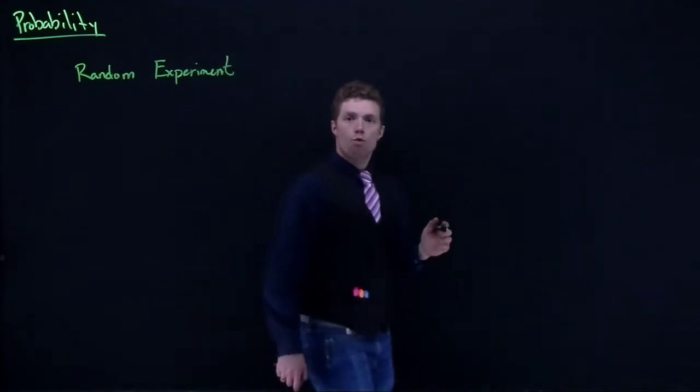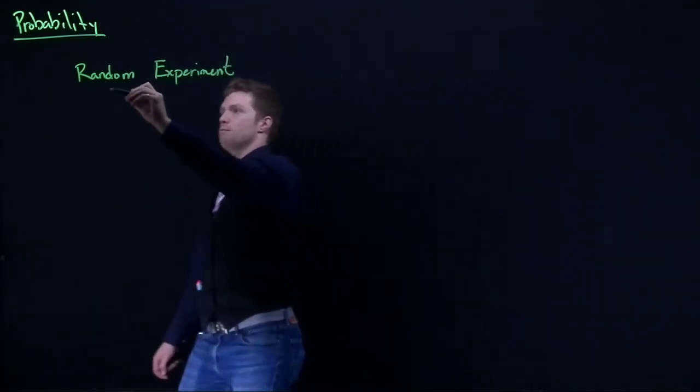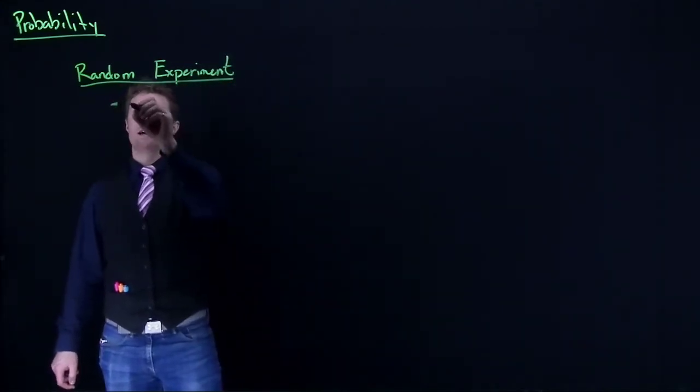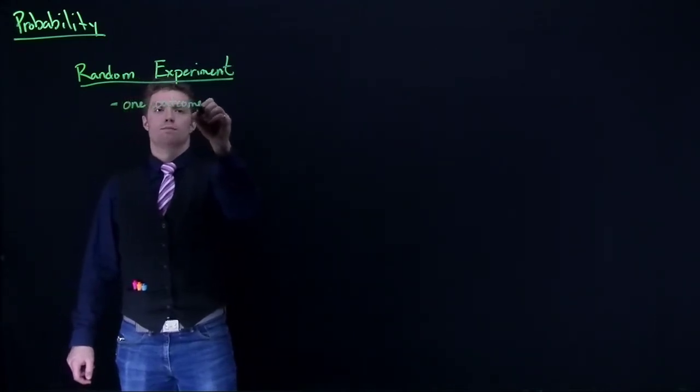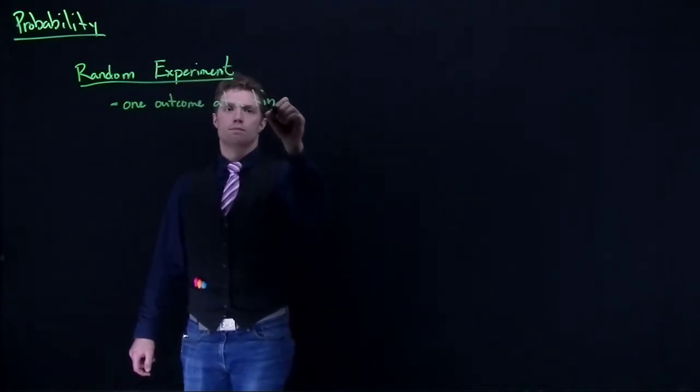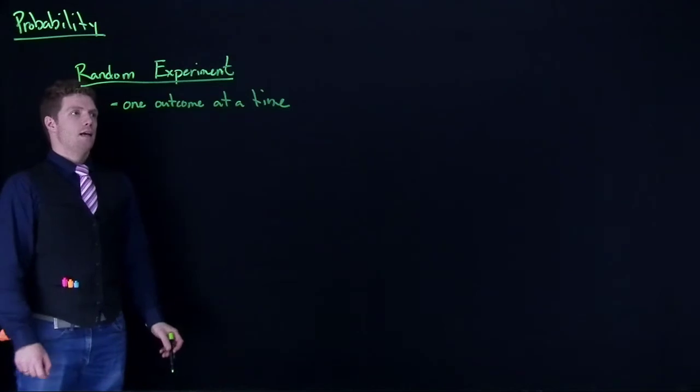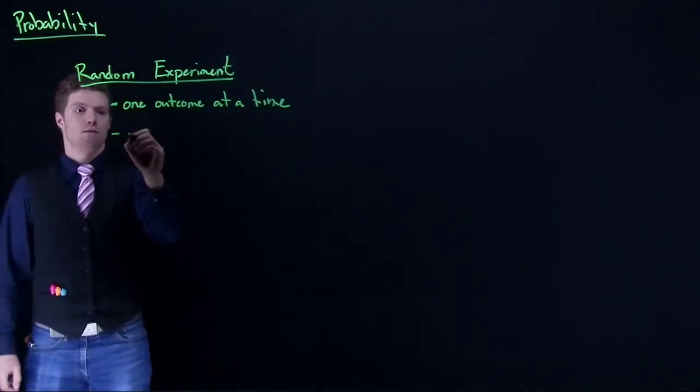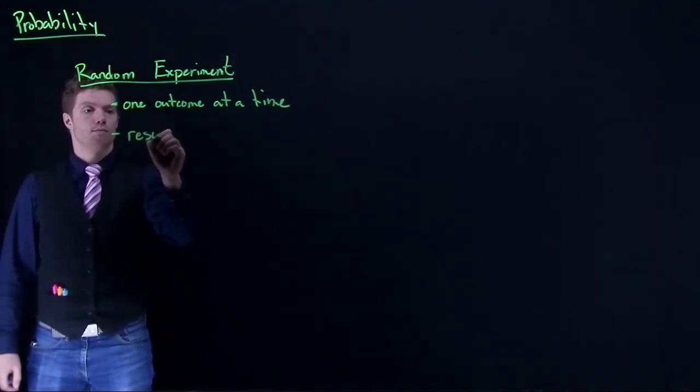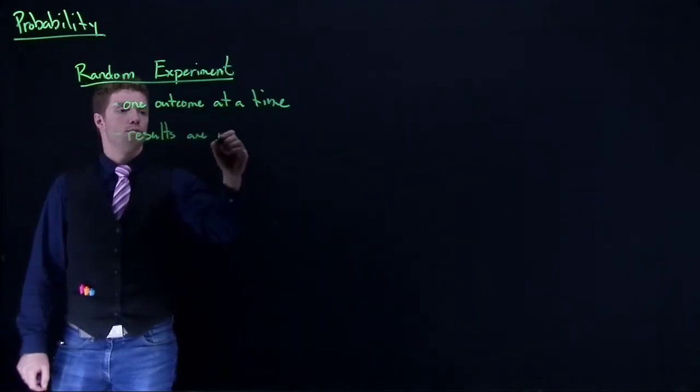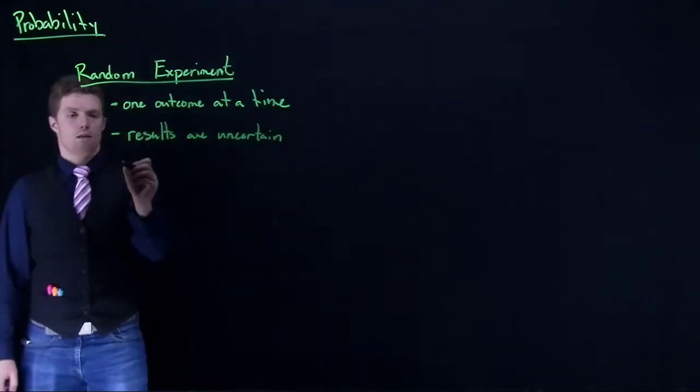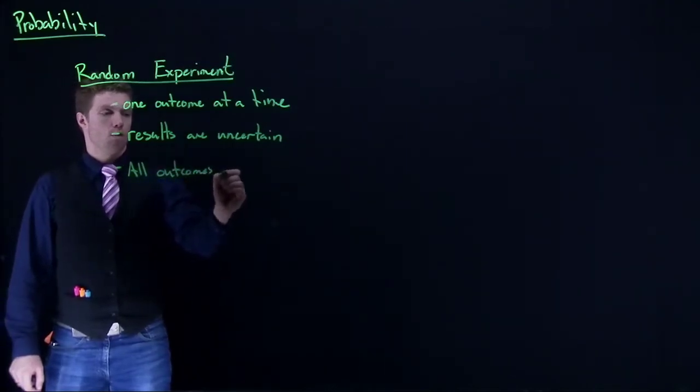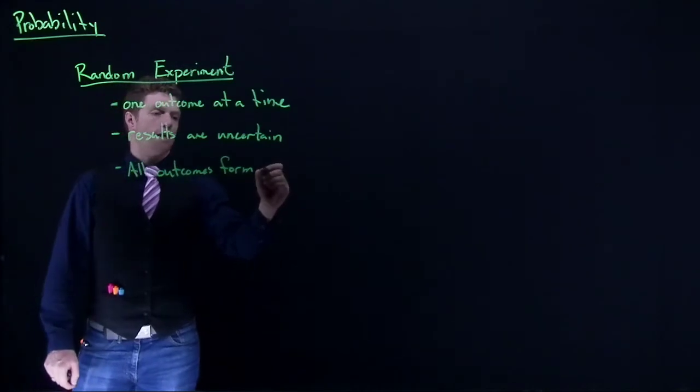When we do a random experiment, the random experiment is defined by a few things. One, only one outcome can happen at a time. The next thing is that the outcomes have to be uncertain, or results are uncertain. And then we can say that all outcomes form what is known as a sample space.